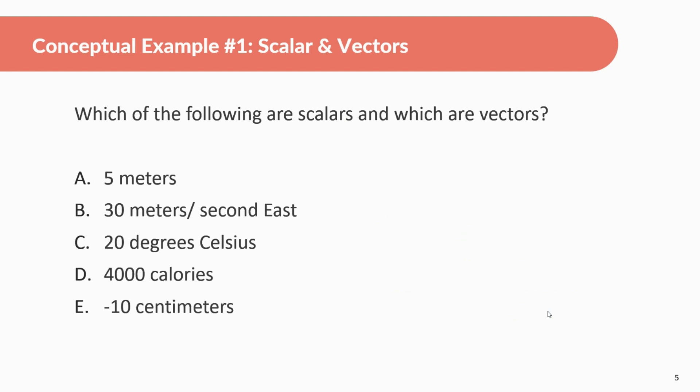Which of the following are scalars and which are vectors? Okay. So you can pause the video whenever you want to just try to figure it out for yourself. Look at these and let's kind of, we're going to go through them one by one. So five meters. Again, it just, it's not really implying any kind of a direction. It's a scalar.